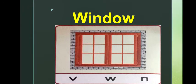Window. W-I-N-D-O-W. The first letter is W and the sound of letter W is W.